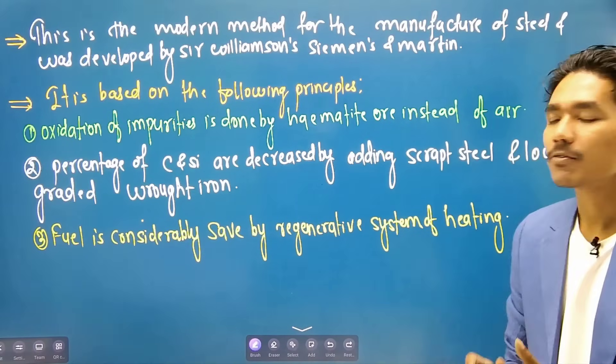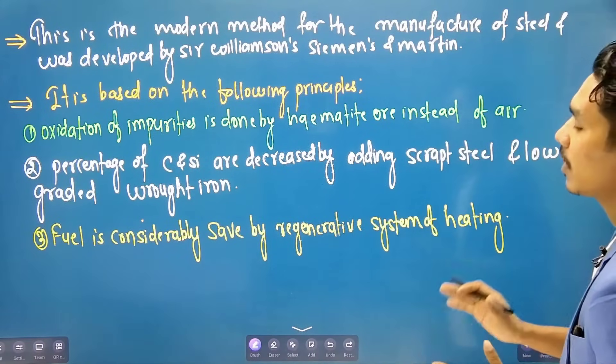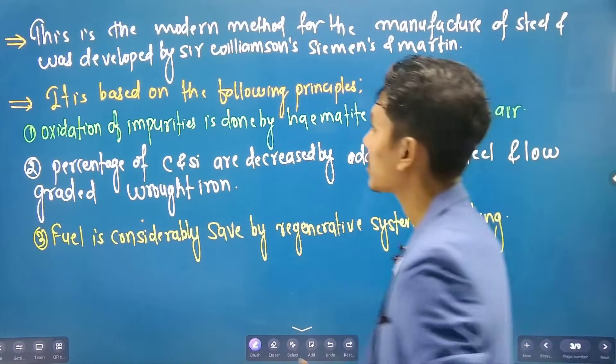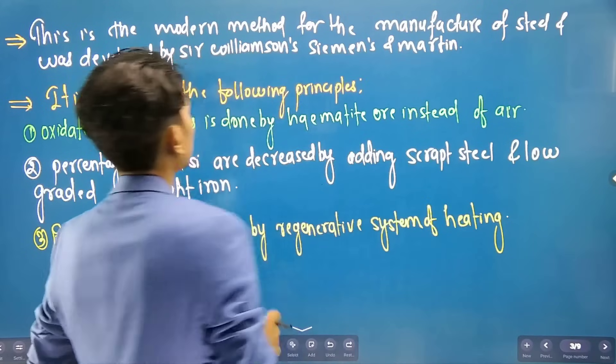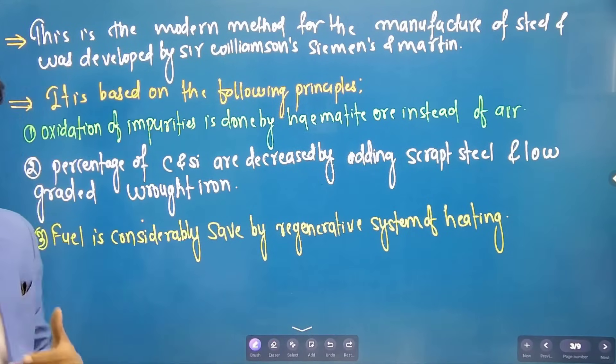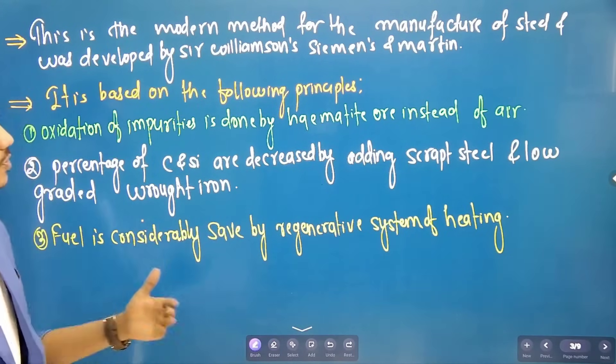The first point is that the Open Hearth Process is the modern method of steel manufacturing.